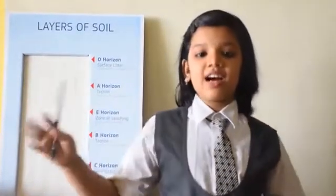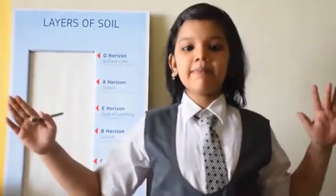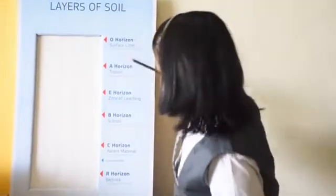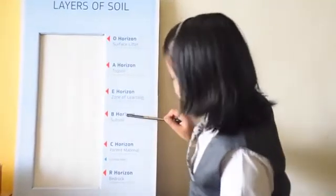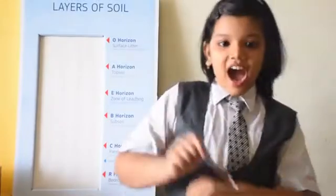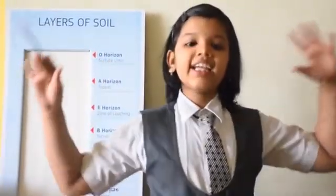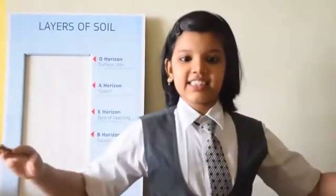The soil layer is composed of a series of horizons. These layers or horizons are represented by letters O, A, E, B, C, and R. Each layer of soil has distinct characteristics.